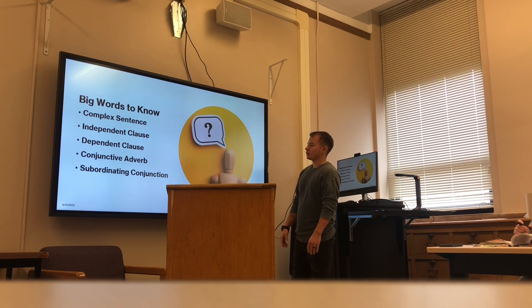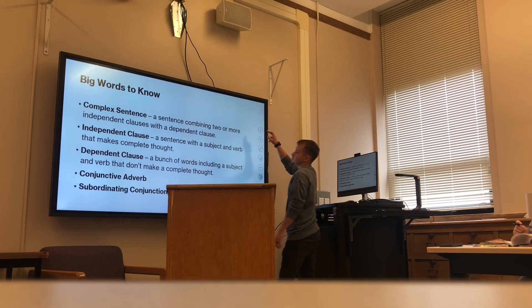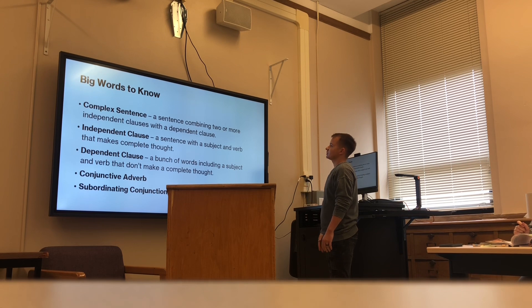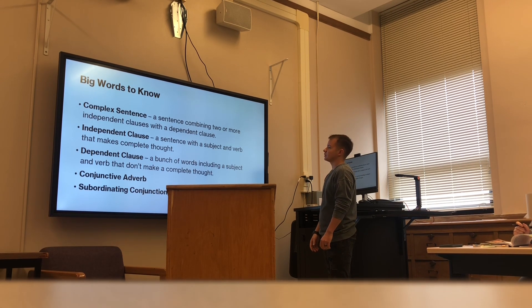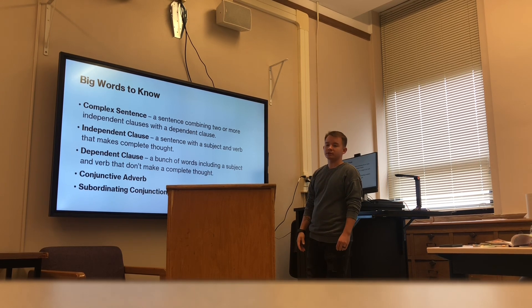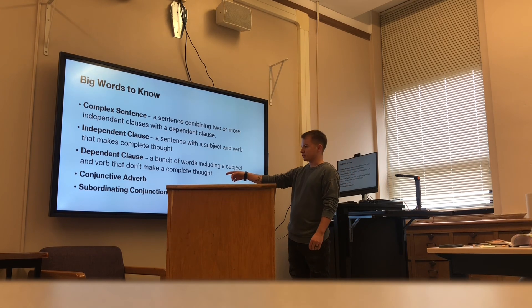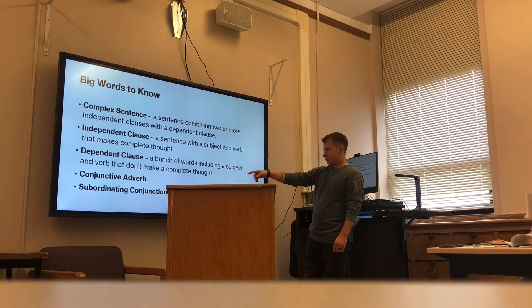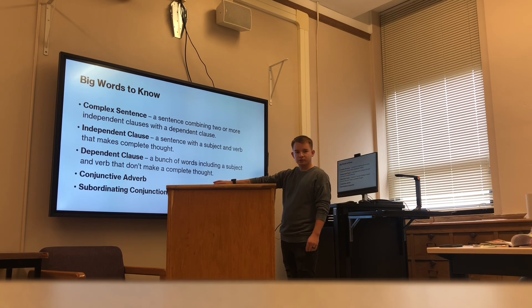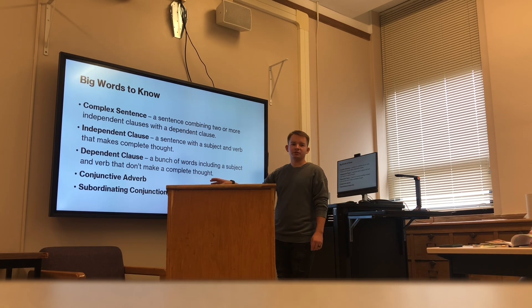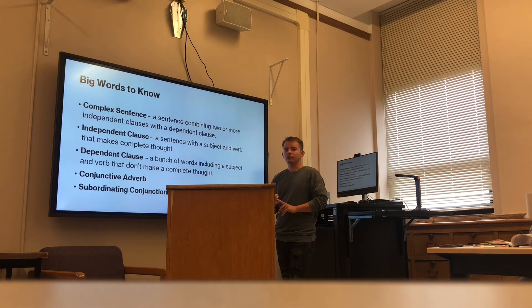We've got big words like conjunctive adverb and subordinating conjunction on here, but we don't need to worry about those. Here are some formal definitions: a complex sentence combines two or more independent clauses with a dependent clause. An independent clause has a subject and a verb that makes a complete thought. A dependent clause is just like that, except it doesn't complete the thought. I suggest we refer to conjunctive adverbs and subordinating conjunctions as 'turning words' — words like because, so, after, therefore that join your clauses together.